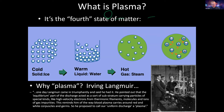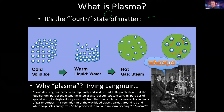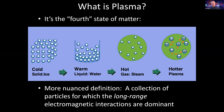Langmuir observed that electrical discharges in tubes of gas resembled the way blood plasma carries red and white corpuscles, so he proposed calling these gas discharges 'plasma.' There's also a connection to the Greek term meaning 'to mold' or 'shapeable,' since plasma can assume interesting gelatinous shapes. More formally, plasma is defined not just as a collection of charged particles, but one where long-range collective interactions—leading to waves and shielding of electromagnetic fields—dominate over close-range collisions.